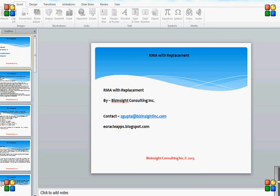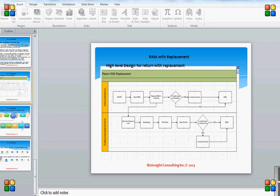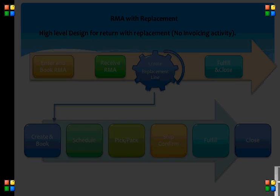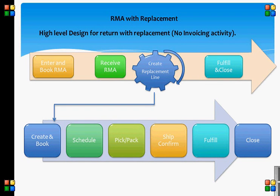Welcome to Bizinsight Consulting. Today's YouTube presentation is all about return for replacement flow. Return flow is very important for any organization. Customers return products for many reasons. Oracle has many seeded flows for return processes like return with or without credit, return with or without receiving, or a combination of both. But there is no seeded flow for auto return replacement, though we can still perform manual replacement with return.